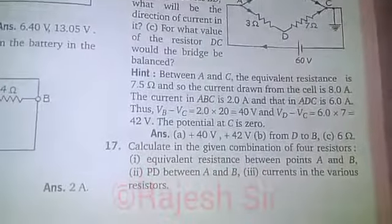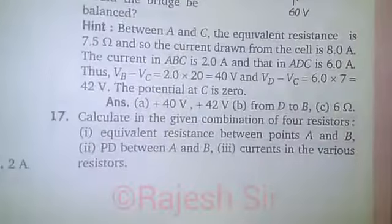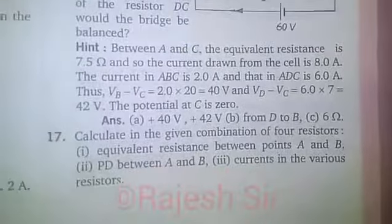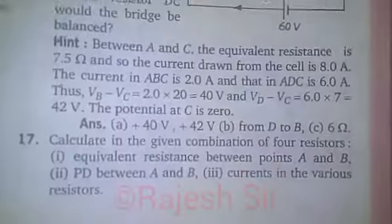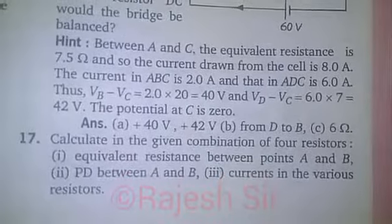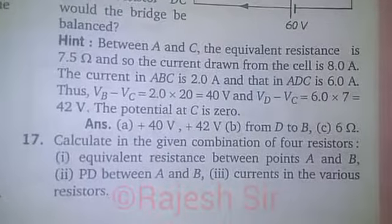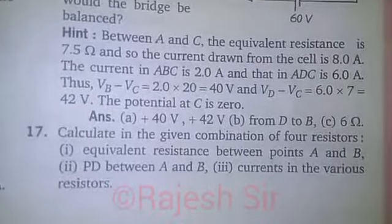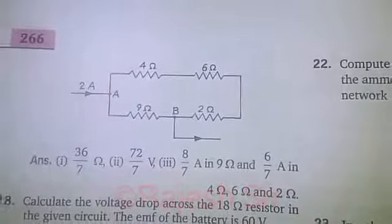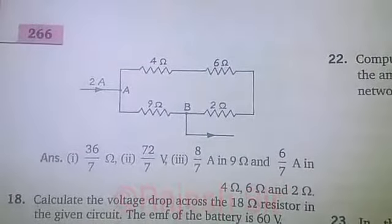Hello friends, today we are about to discuss problem number 17. As you can see, calculate in the given combination of four resistors: equivalent resistance between points a and b, potential difference between point a and b, and currents in the various resistors. The figure is drawn over here as you can see.